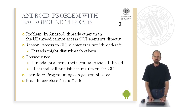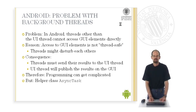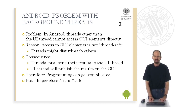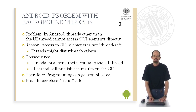In Android there is a special problem: threads other than the UI thread cannot access the graphical user interface directly. The reason for this is that access to user interface elements is not thread-safe. If multiple threads access the user interface they may disturb each other, so the graphical user interface can only be accessed by the user interface thread. Other threads must send their results to the user interface thread, and in turn the user interface thread will publish the results on the interface.